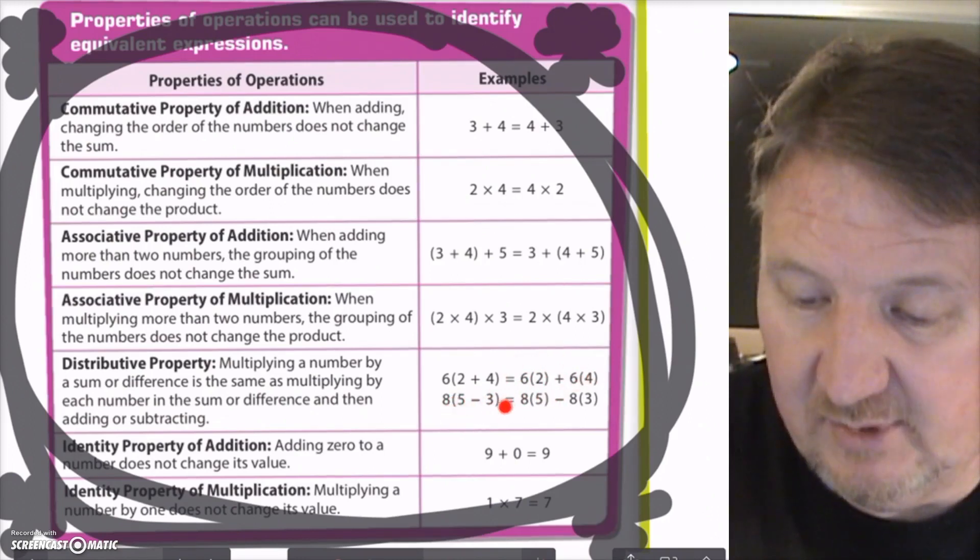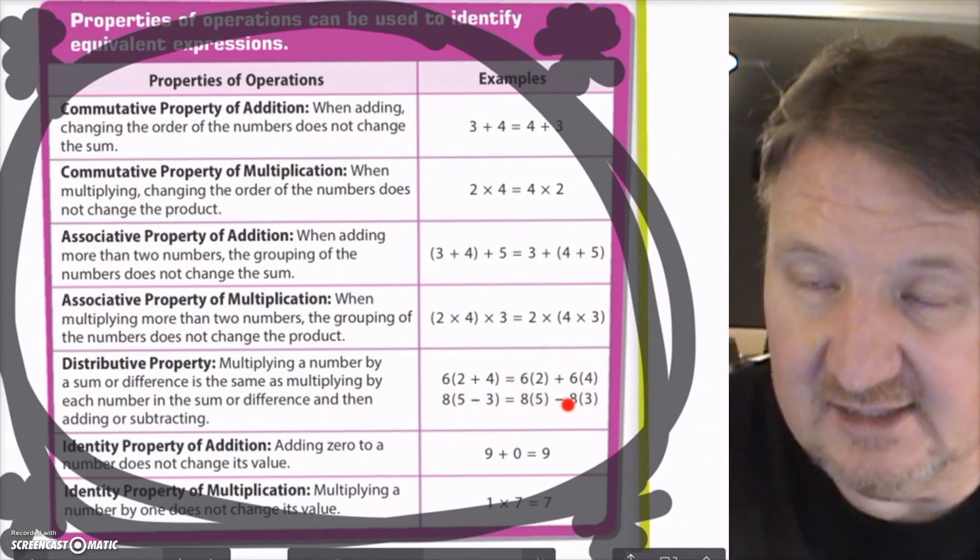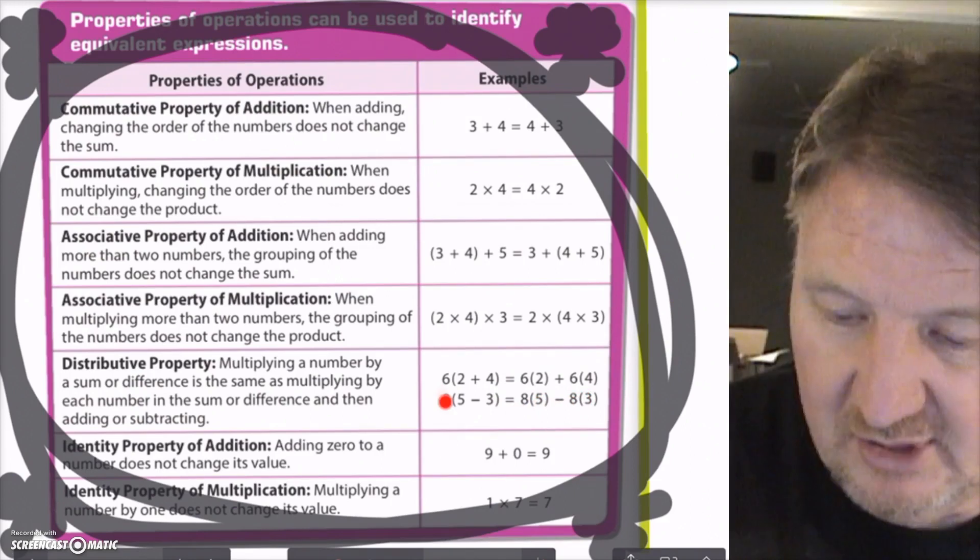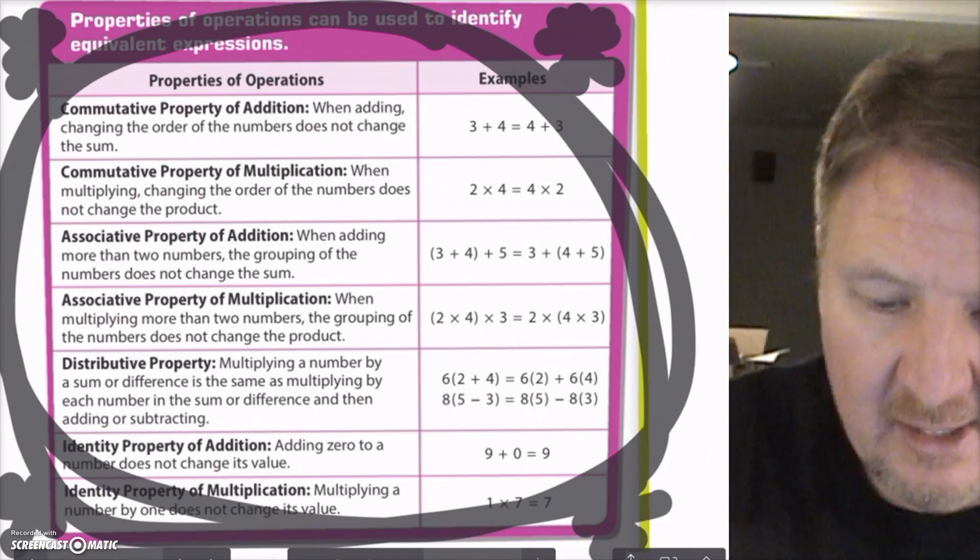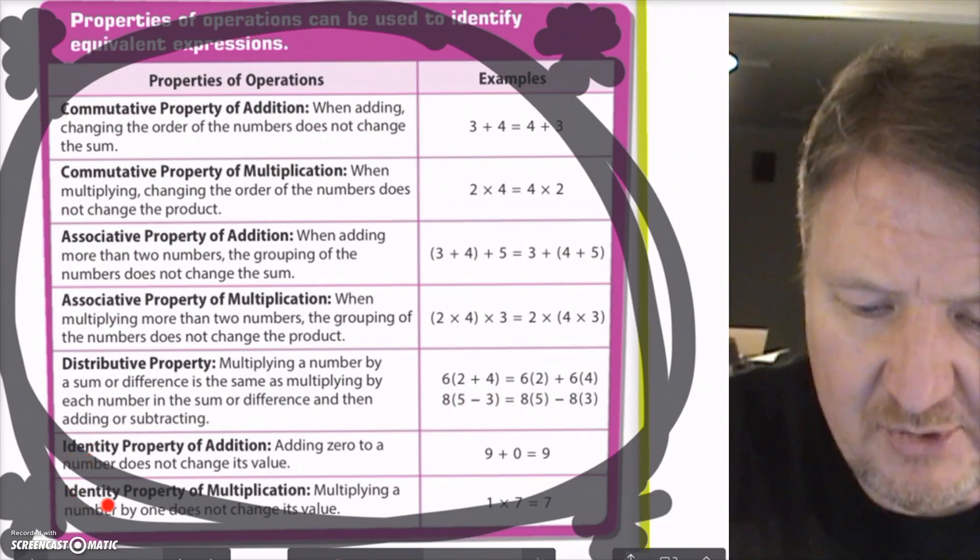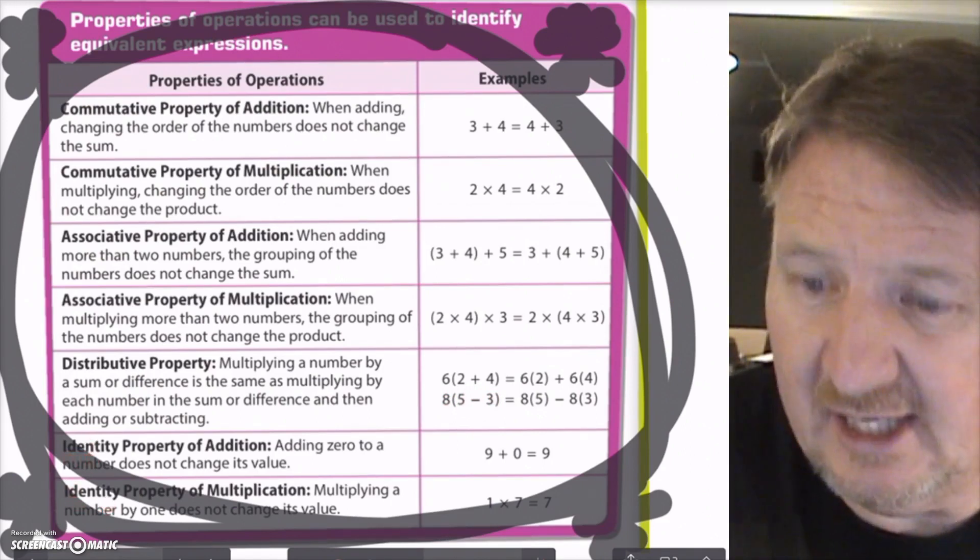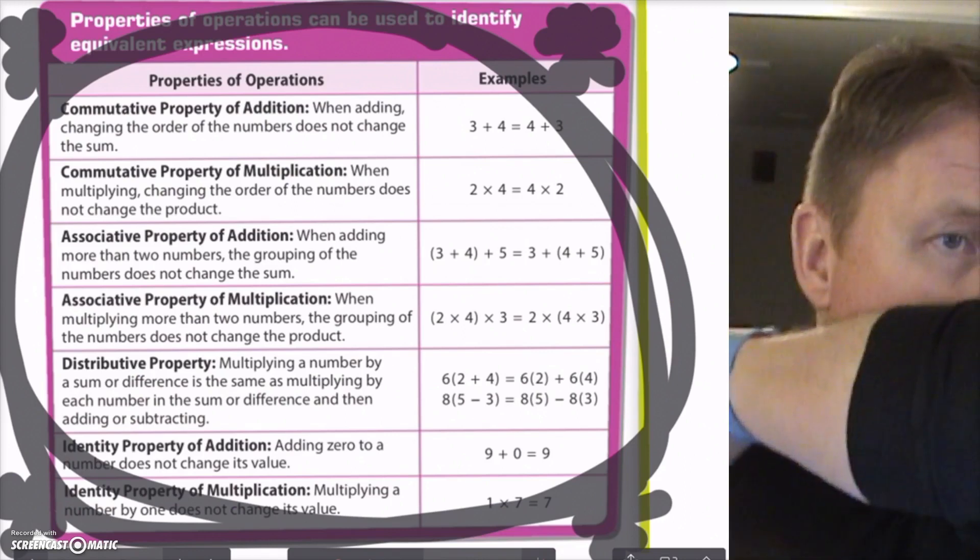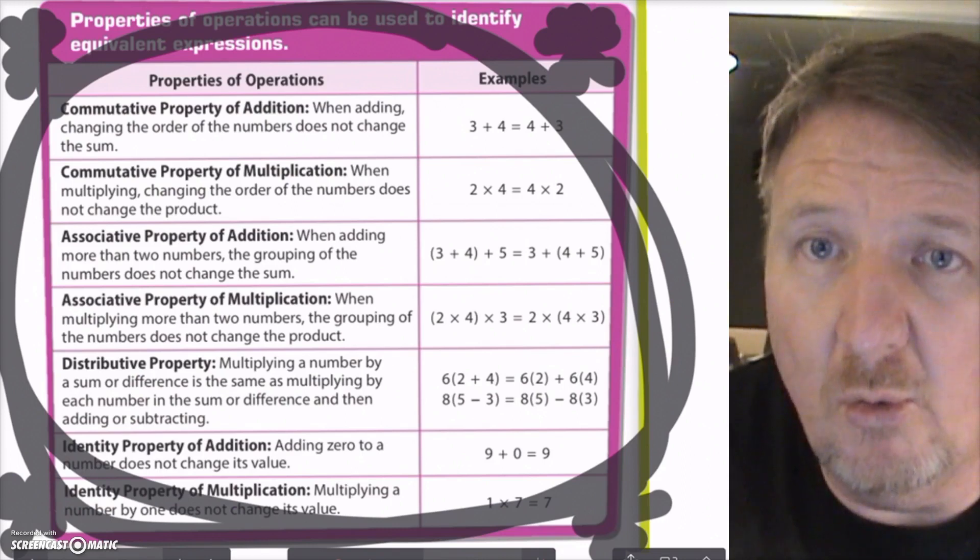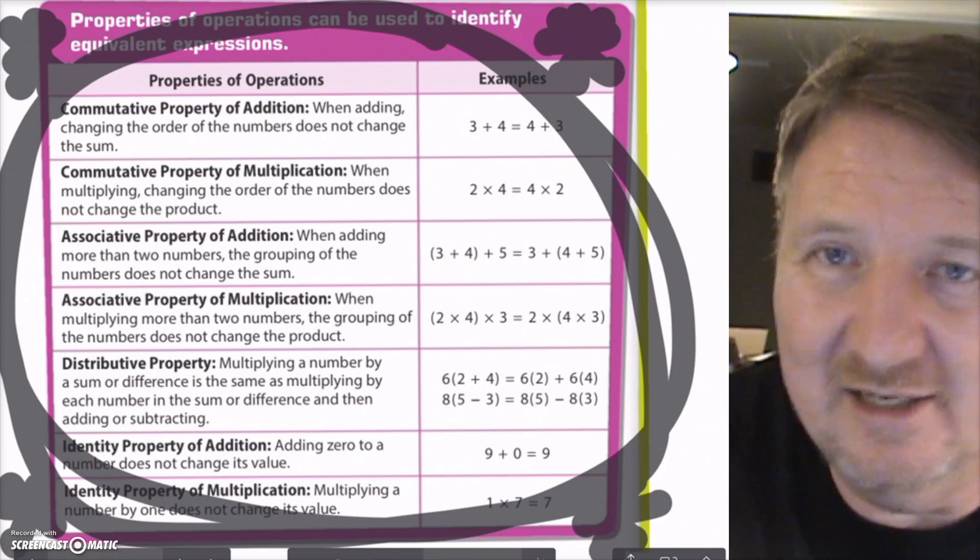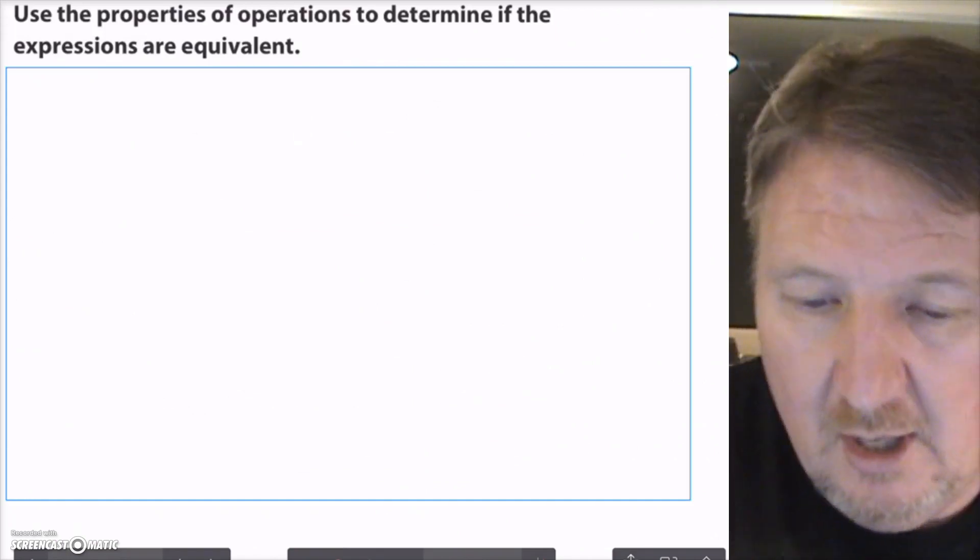Then I have 5 plus 5 minus 3. I got 2, and I can say, 8 times 2 is 16. Here, I can say, 8 times 5 is 40, 8 times 3 is 24. I subtract, I get 16. You're just distributing this 8 to each term inside the parentheses. Then you have the identity properties of both addition and multiplication. The identity property just says you can add a 0 to a number, and it doesn't change the value of the number. Or you can multiply a number by 1, and it doesn't change the value of the number.